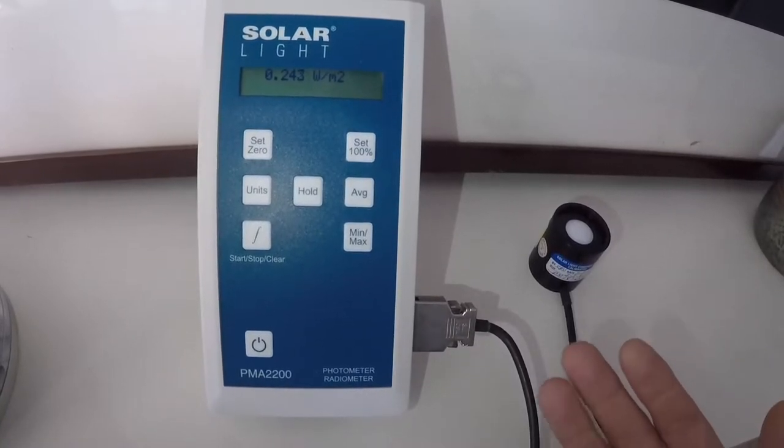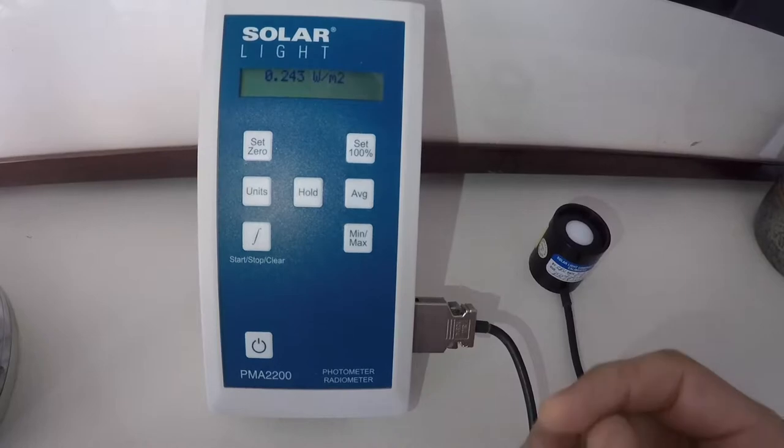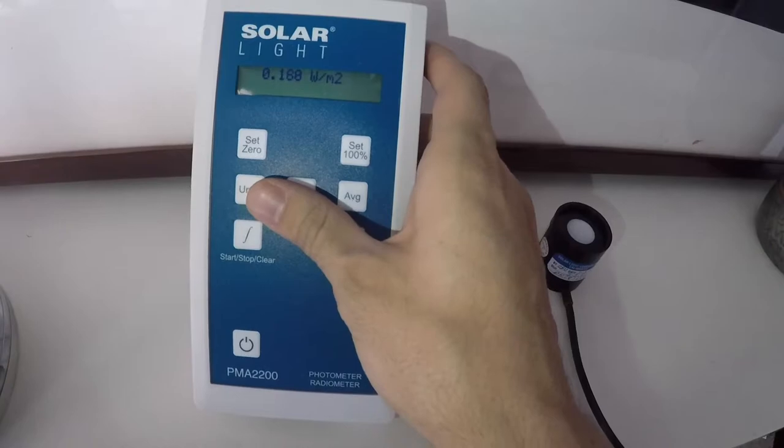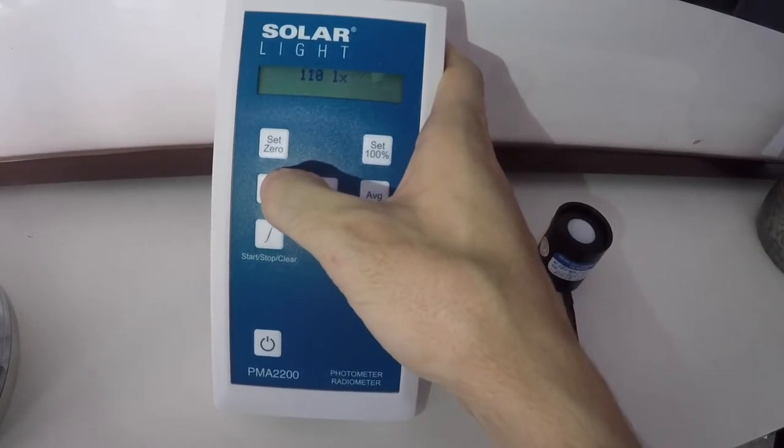I have my sensor plugged in, and we have it up and running. If we look up top we can see that we're getting data. If I use my Units button, I can switch between all the different available units that the sensor comes with.